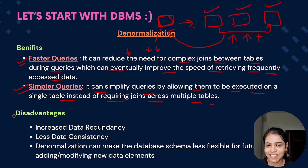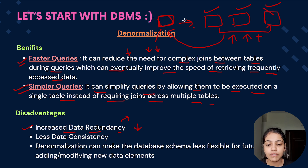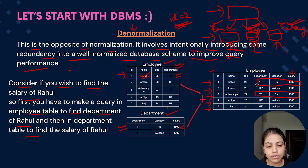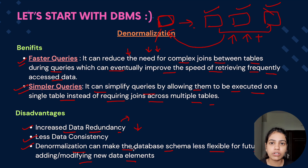With advantages there are always disadvantages. The first disadvantage is increased data redundancy — we introduced normalization to decrease data redundancy, but in denormalization we are combining all tables back into a single table, so data redundancy increases. The second is less data consistency — if we combine everything in a single table and need to update the salary for IT department employees, missing an update for any employee means different salary values for people in the same department, causing data inconsistency.